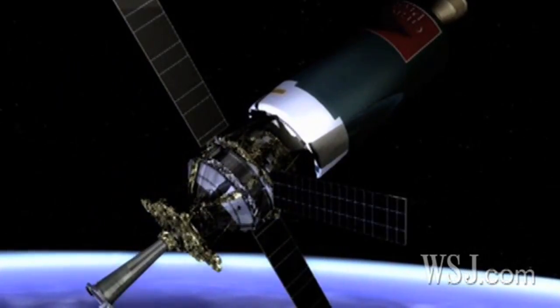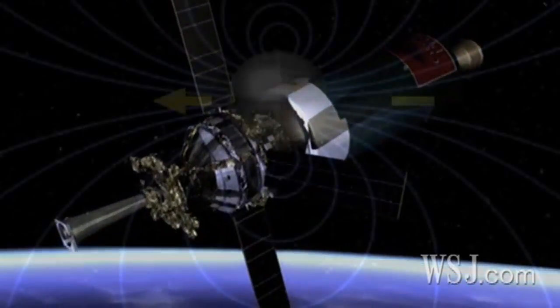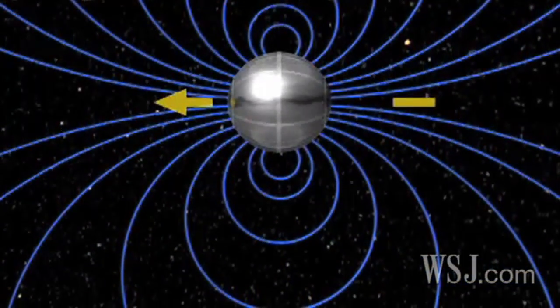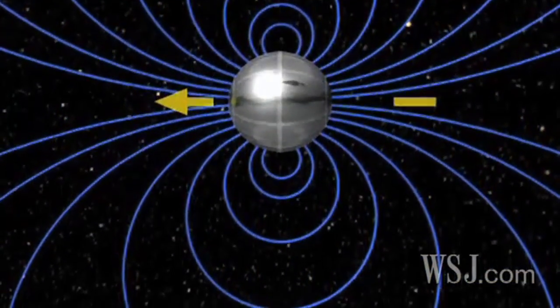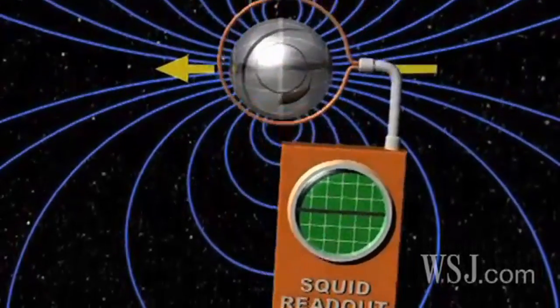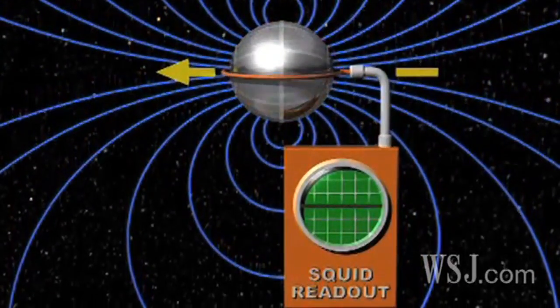And if Einstein had it right, the gyroscopes, spinning like a child's top, would tilt ever so slightly and wobble as they were dragged off-true by the vortex of space-time stirred by the Earth.